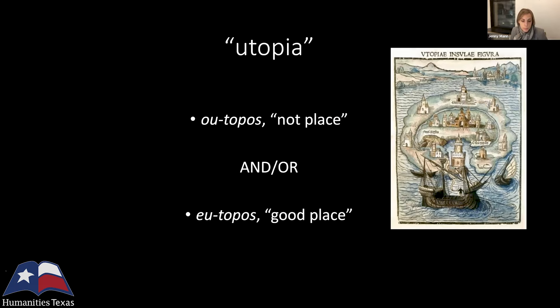Utopia is a word of More's invention that means either 'no place' — utopos — and possibly also 'good place' — eutopos. This tension between these two possible meanings, the not-place and the good place, is fundamental to the genre throughout its long history. The question of whether or not utopia can ever be brought into existence, and whether or not it's ever really very good, are tensions fundamental to the genre.